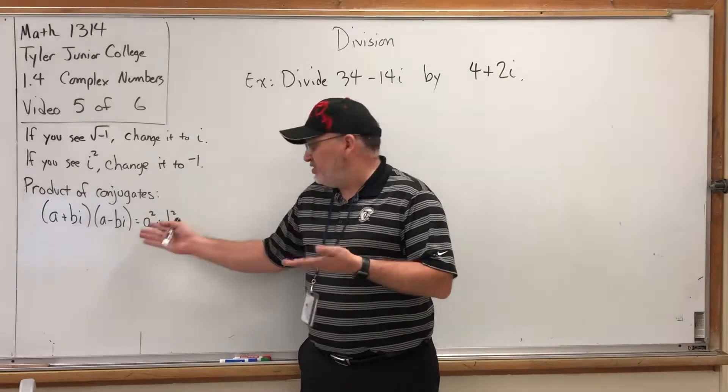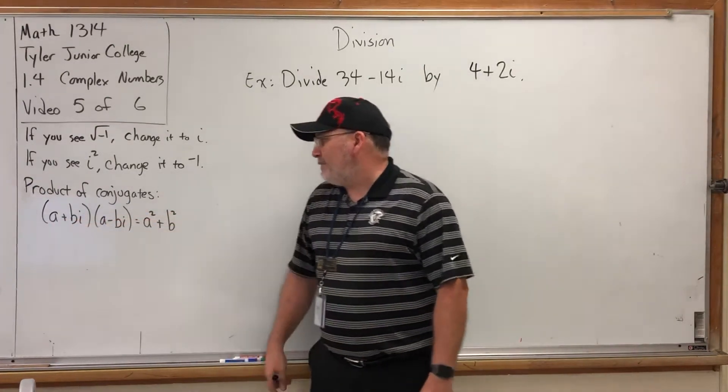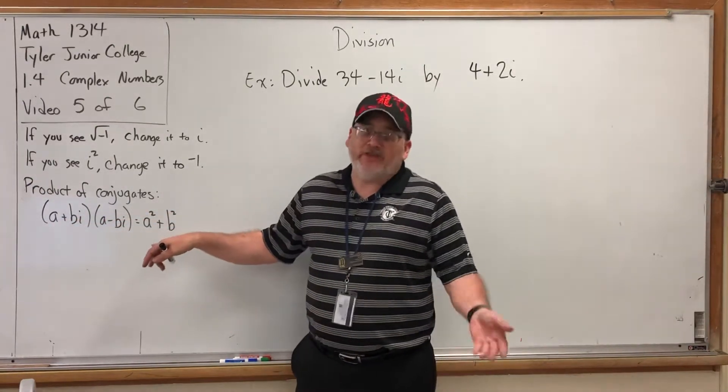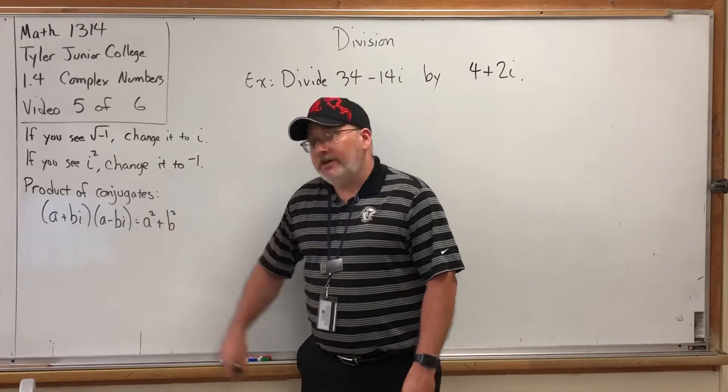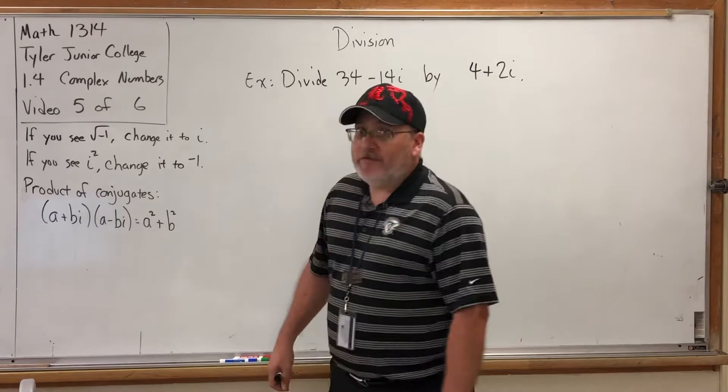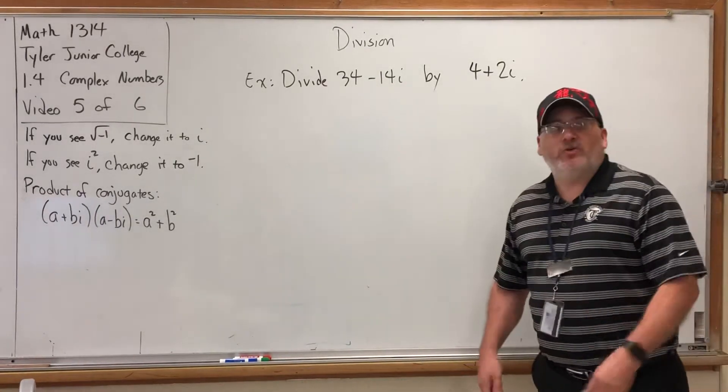You don't have to memorize this formula. This is just saying that when you multiply (a+bi) and (a-bi), the product will always be a² + b², and more importantly this is a real number—it has no i's. That will be very important in just a moment. So let's move on to division, which is a natural place to go after multiplication.